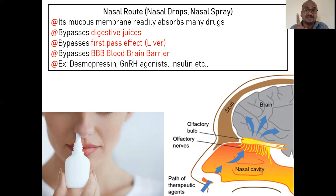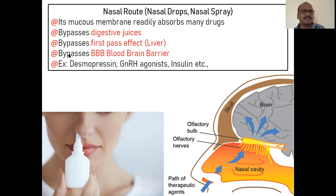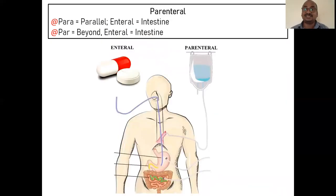The nasal route is special because, although it does not cross the blood-brain barrier in the conventional sense, the drug directly enters the brain via the olfactory bulb. The drug is applied nasally, bypasses the blood-brain barrier, bypasses first-pass metabolism in the liver, and also bypasses gastric juices. From the nasal route directly to the olfactory bulb, and from there directly into the brain. This is related to Nasya karma in Ayurveda.